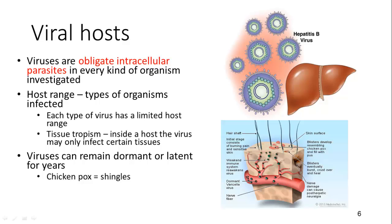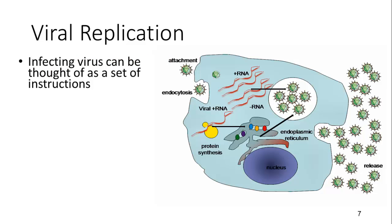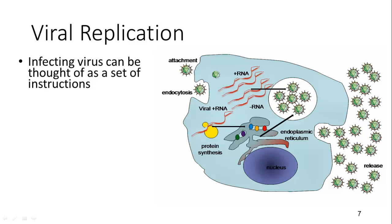An example of dormancy is chicken pox: if you've had chicken pox, you may later get shingles, which is the same virus. It doesn't present itself exactly the same — it presents as painful blisters, and this is shingles when it occurs later in life. There are more kinds of viruses than organisms, which makes sense because they are much smaller. One organism can be infected by many different types of viruses.